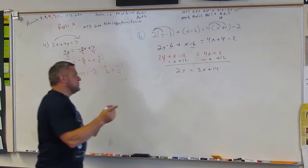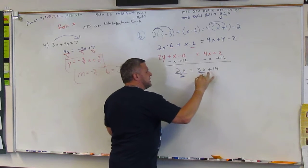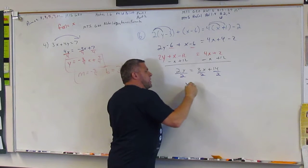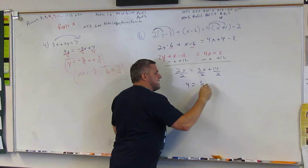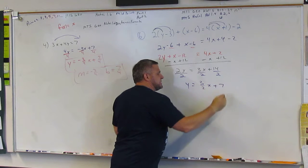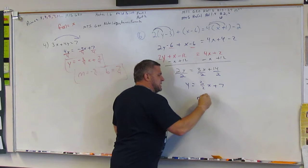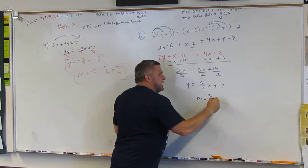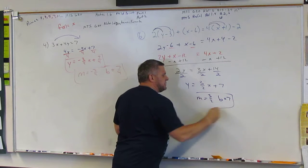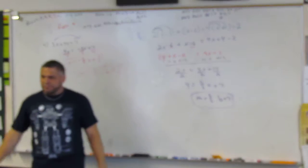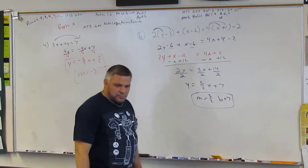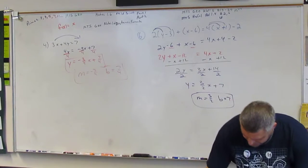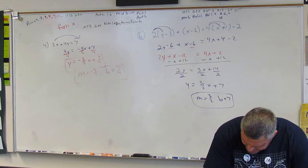Then what do I do? Divide by two, divide by two, divide by two. Y is equal to three halves x plus seven, m is equal to three halves, and b is equal to seven. Okay? That's not bad.